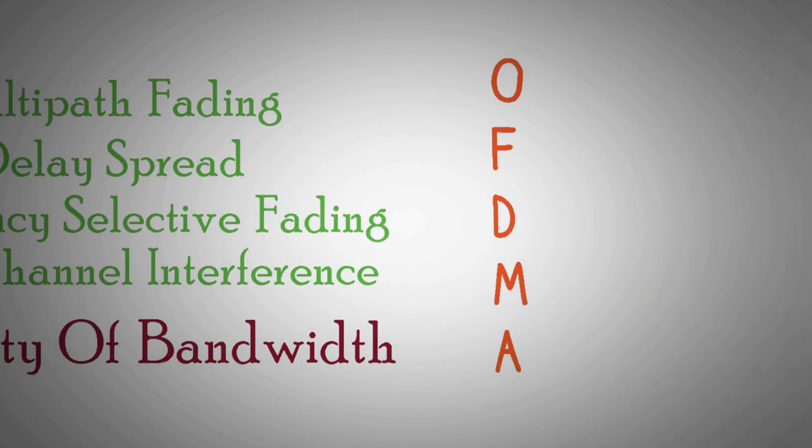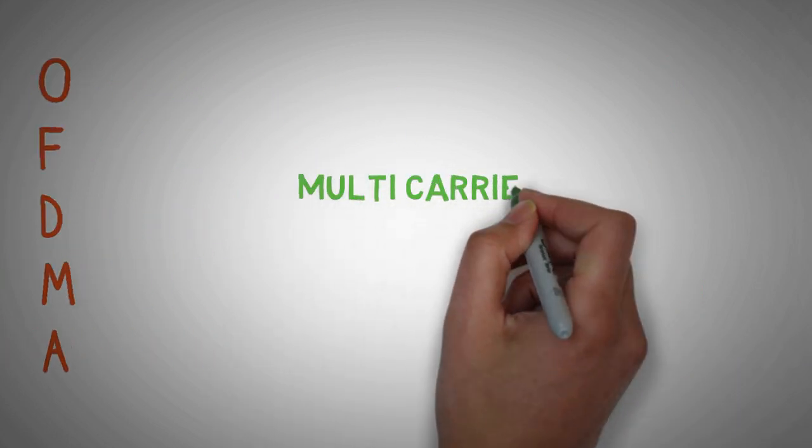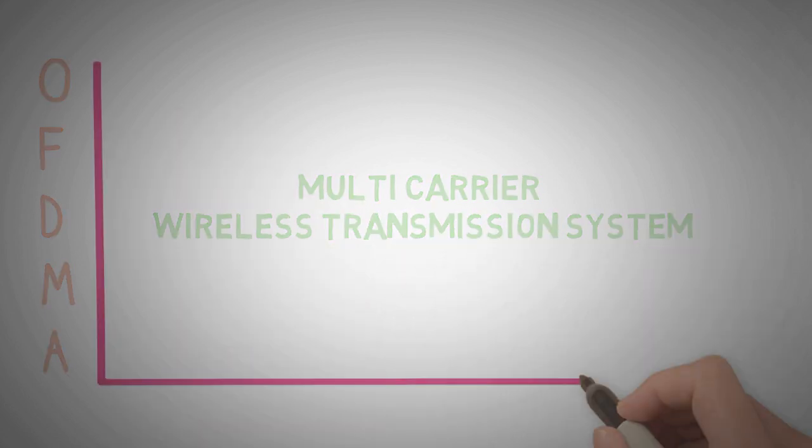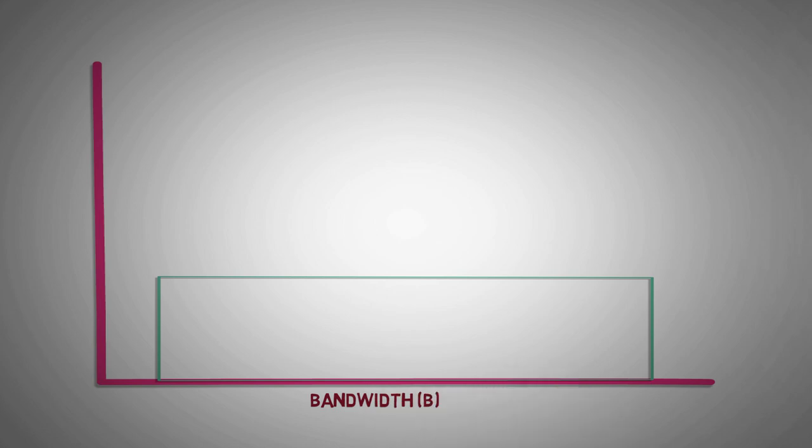Before diving into OFDMA let us understand multi-carrier wireless transmission system. Suppose a signal is to be transmitted over a bandwidth B and carrier frequency FC.